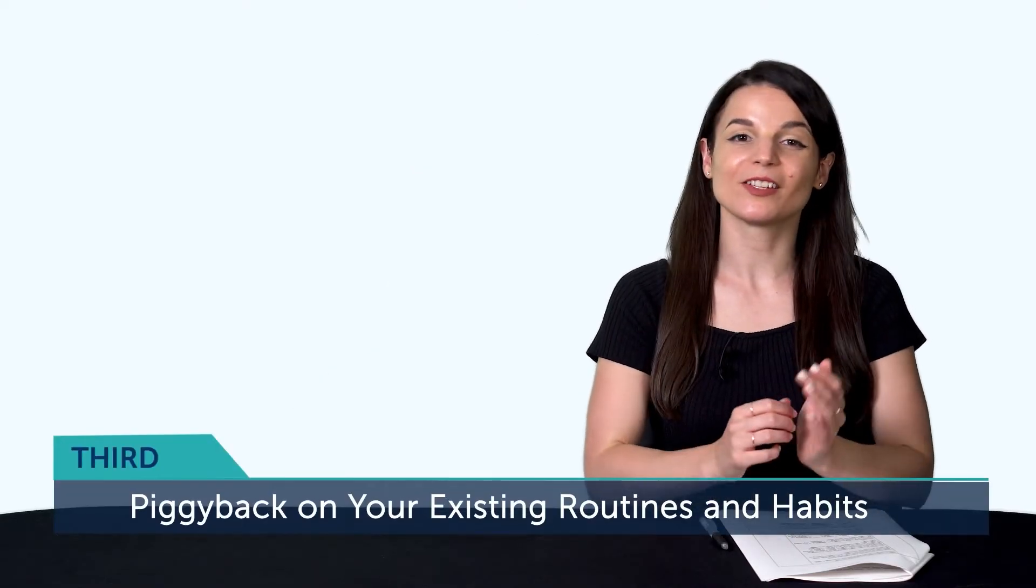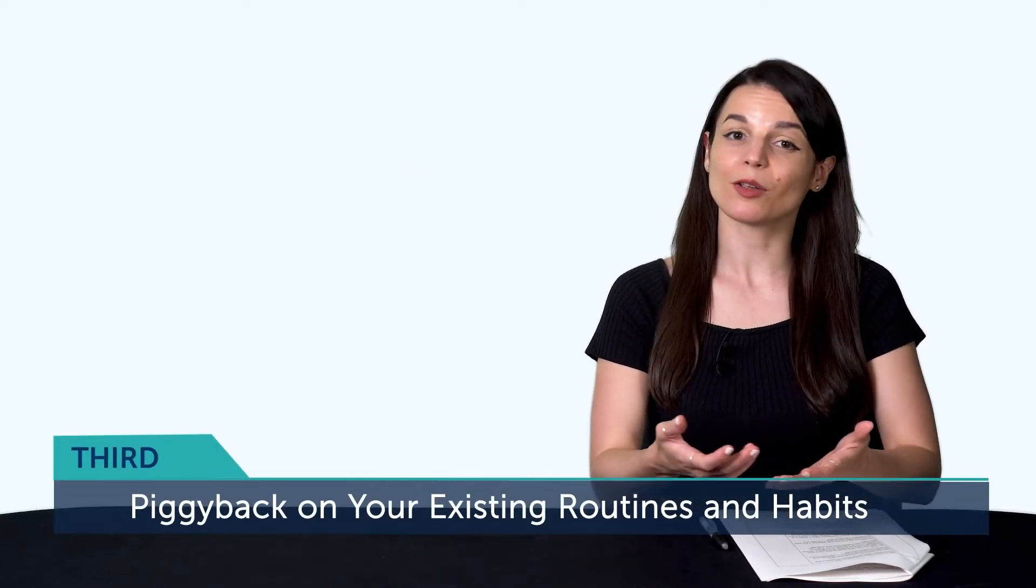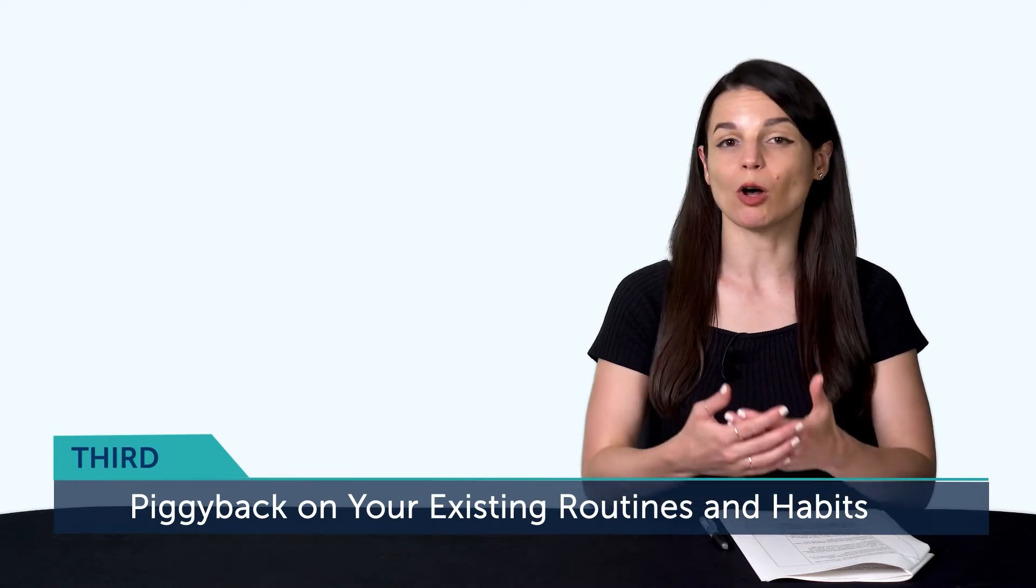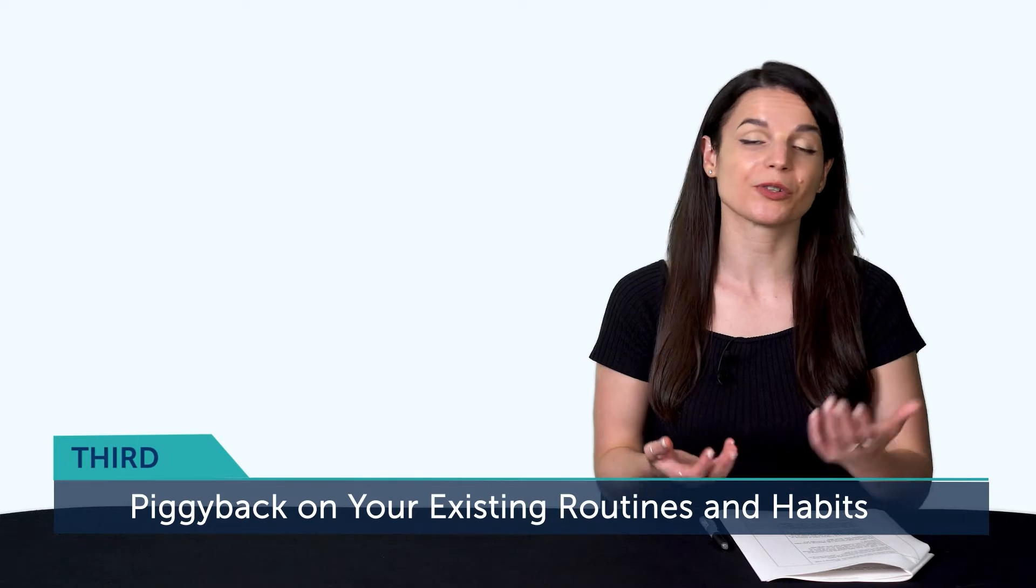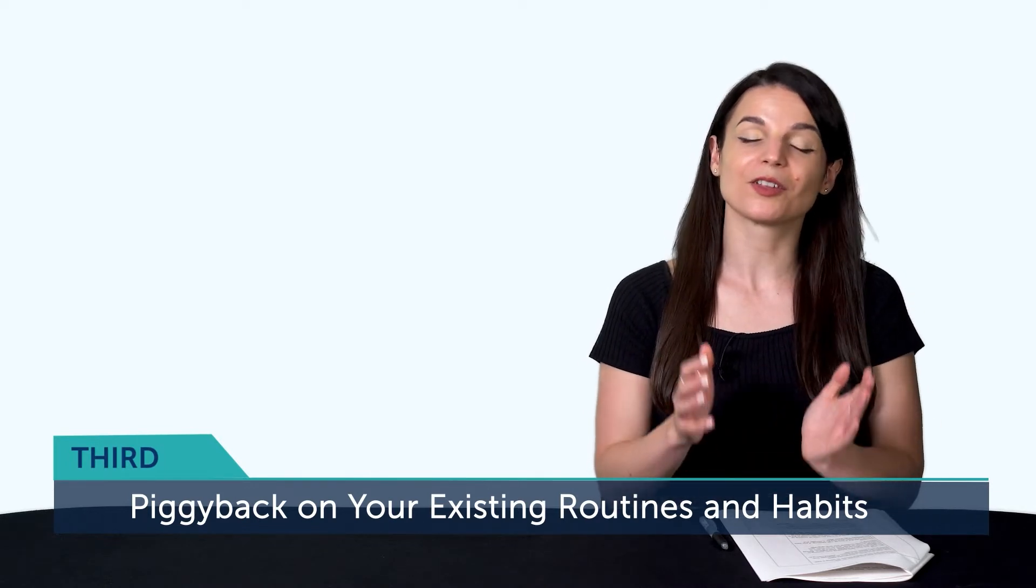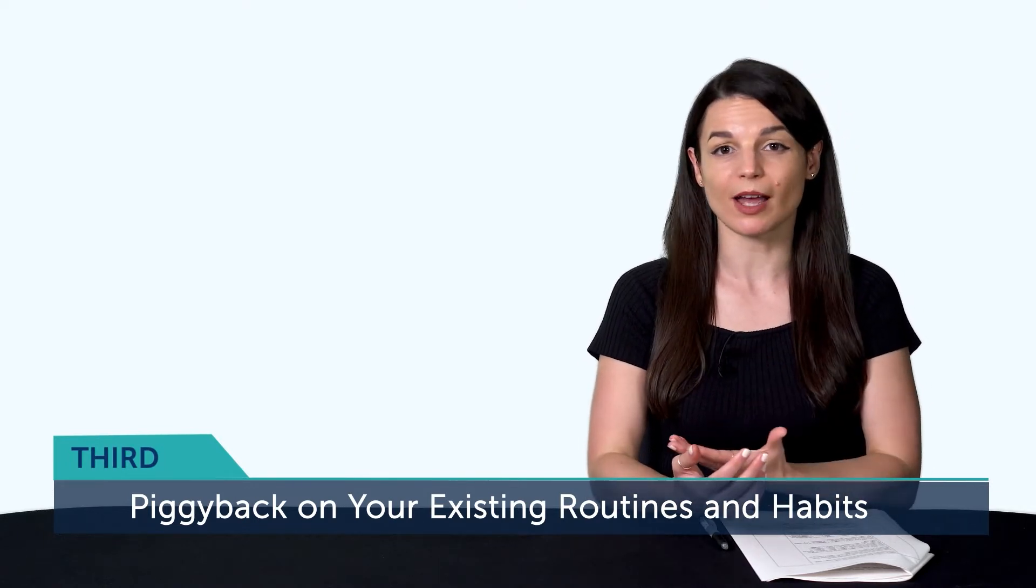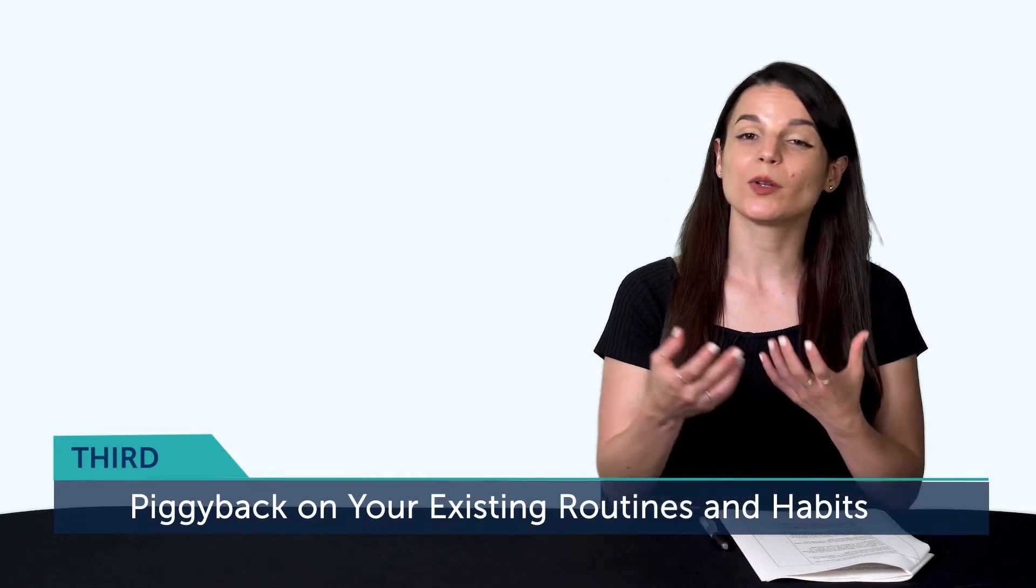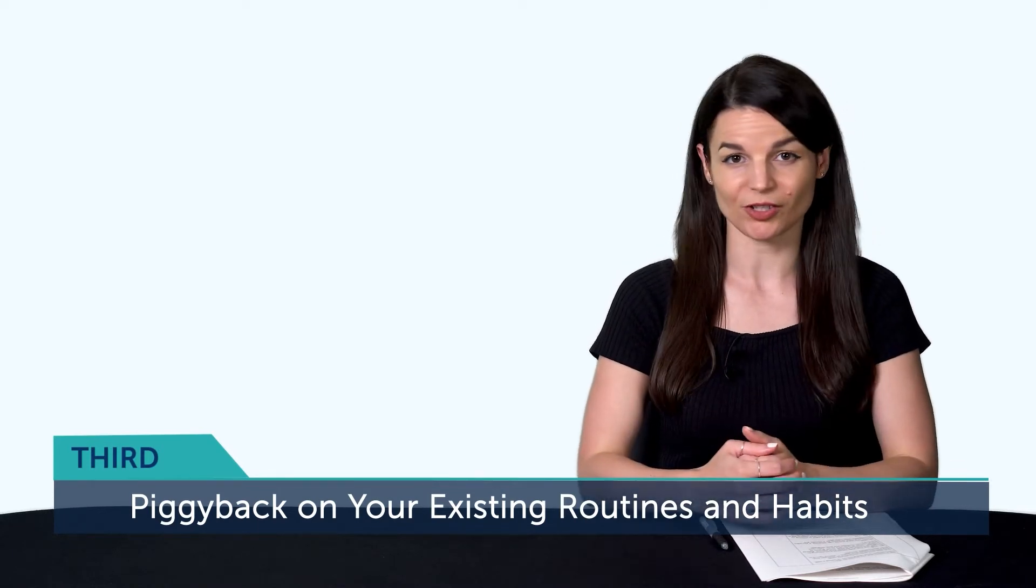Third, piggyback on your existing routines and habits. In other words, combine language learning with a routine that you already do. Like commuting to work, doing chores, or taking a walk. That way, your brain automatically starts associating your commute time as language time. And you can easily do a lesson without having to push and motivate yourself. So, map out your daily schedule from morning to night and make it detailed. 8am, wake up. 8.30am, breakfast. Commute at 9am. Arrive at work at 9.30am. Lunch at 1pm. And so on. Then, look where you can multitask and stick language learning in.